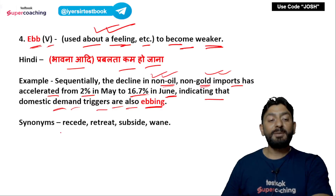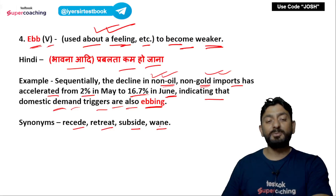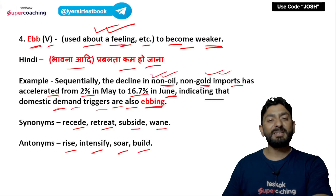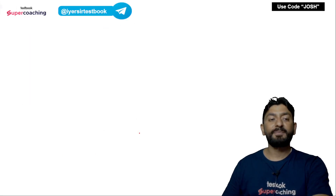Synonyms of 'ebb': recede, retreat, subside, wane — जिसका मतलब है कम हो जाना, पीछे की तरफ जाना. Antonyms: rise, intensify, soar, build — जिसका मतलब है बढ़ना, increase होना.